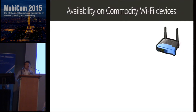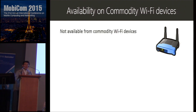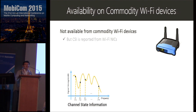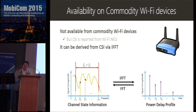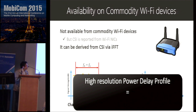Before diving into the details, let me introduce how we obtain a power delay profile from commodity Wi-Fi. It is not directly available, but Wi-Fi cards report channel state information (CSI), which is a frequency-domain characterization of the wireless channel. We can then derive the time-domain power delay profile from the CSI via IFFT transformation. Importantly, the CSI covers the same bandwidth as the original signal, so obtaining a high-resolution power delay profile equals obtaining a wideband CSI.